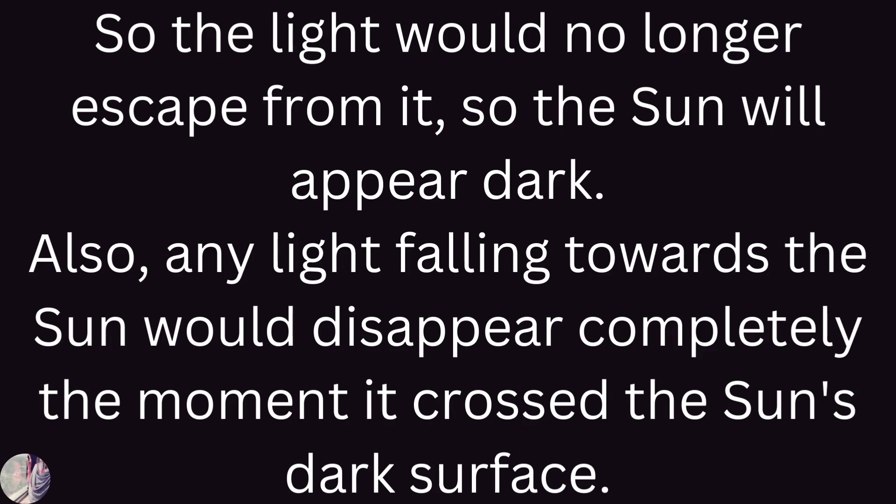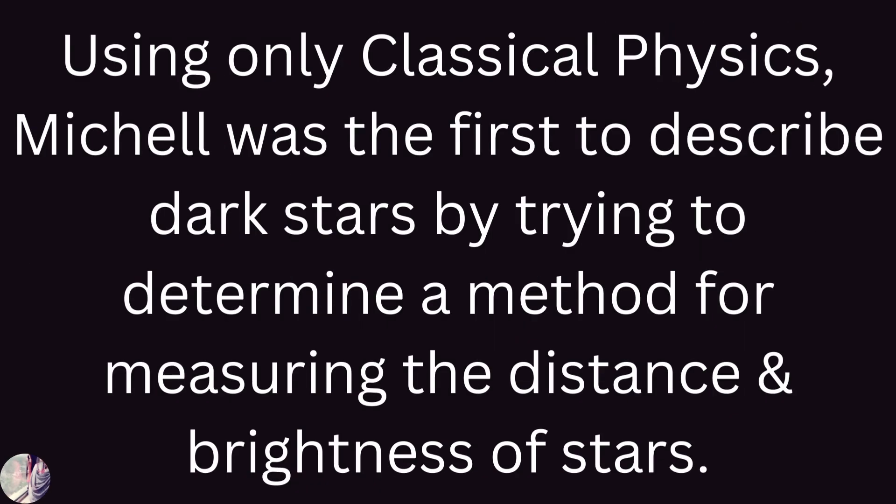Also, any light falling towards the Sun would disappear completely the moment it crosses the Sun's dark surface, or what we call its event horizon. Using only classical physics, Michell was the first to describe dark stars by trying to determine a method for measuring the distance and brightness of stars.